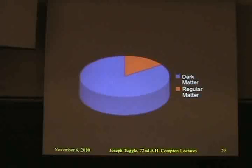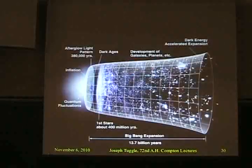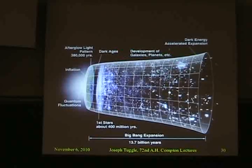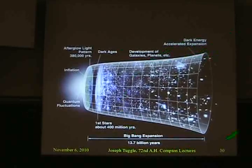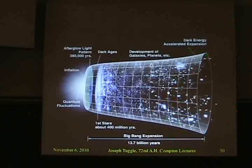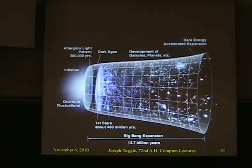The last problem I'll mention is something even more mysterious. What you see here is a picture of how the universe has evolved from the Big Bang to present day. At the end there's a little bit of flaring in size — this thing represents the size of the universe as time goes on. This flaring represents our discovery just in the last 12 to 15 years that space itself is expanding — the universe is expanding, and not only is it expanding, it's speeding up.